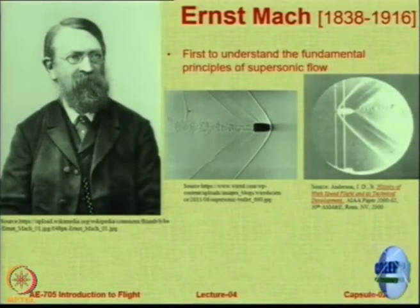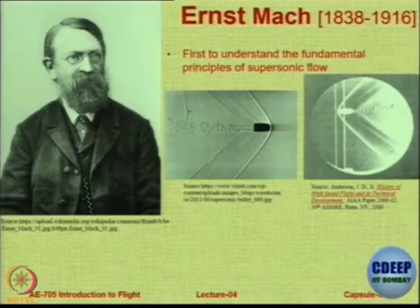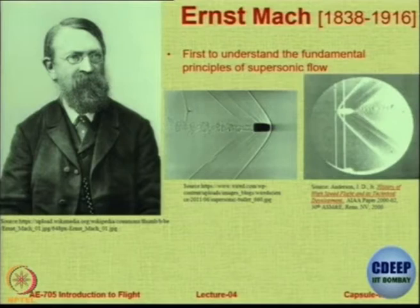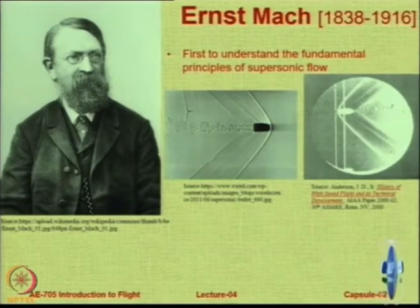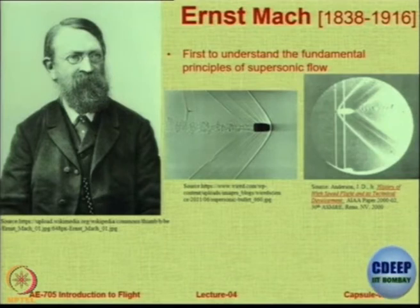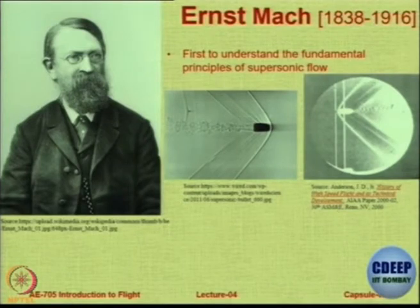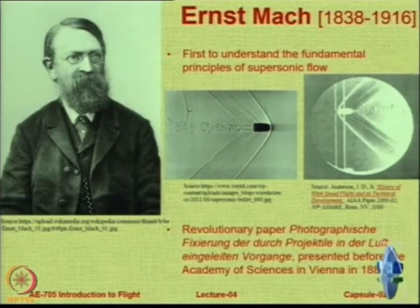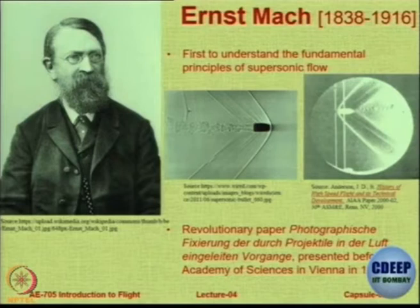On the left hand side you have a more recent photograph of a bullet, and this particular photograph has been taken using the technique of Schlieren photography. Here you do not see those two vertical lines, and this photograph is much more clear. But fundamentally it is the same — the two photographs are doing the same thing, trying to capture the flow field around a bullet. This particular photograph by Mach was presented in a very outstanding paper. Look at the date — it is very old, 1887.